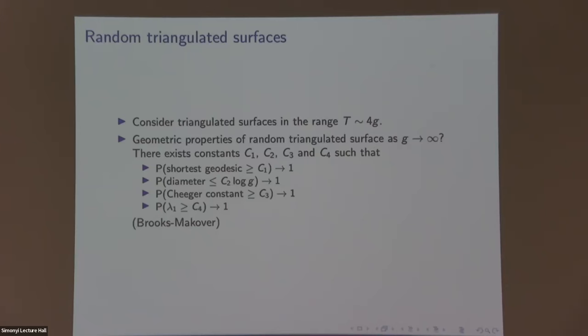Question about the random model: for a fixed t and g, there are a finite number of surfaces, and you just pick one uniformly. Regarding automorphisms — it's just up to combinatorial isomorphism, like isomorphism of triangulations.